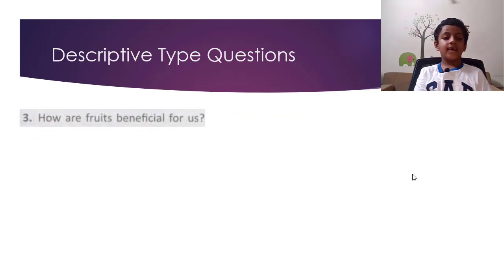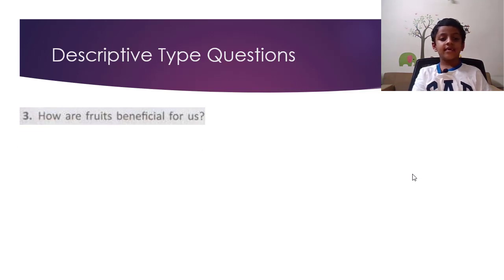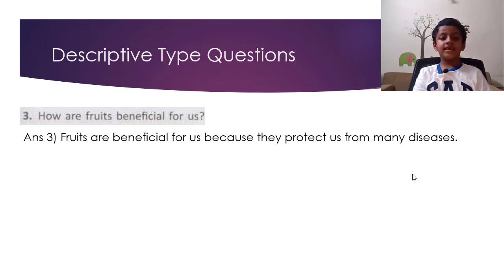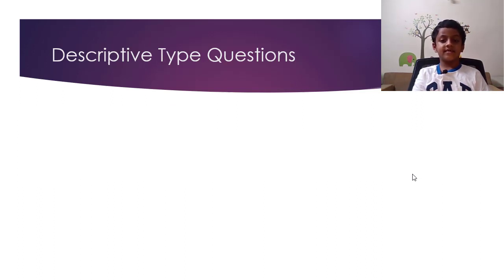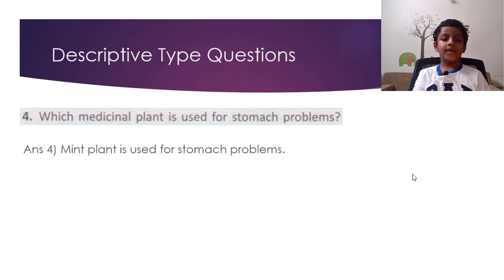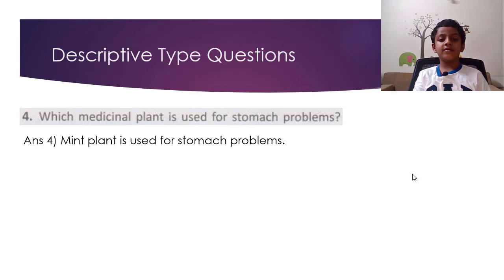Question 3: How are fruits beneficial for us? The answer is: fruits are beneficial for us because they protect us from many diseases. Question 4: Which medicinal plant is used for stomach problems? The answer is: mint plant is used for stomach problems.